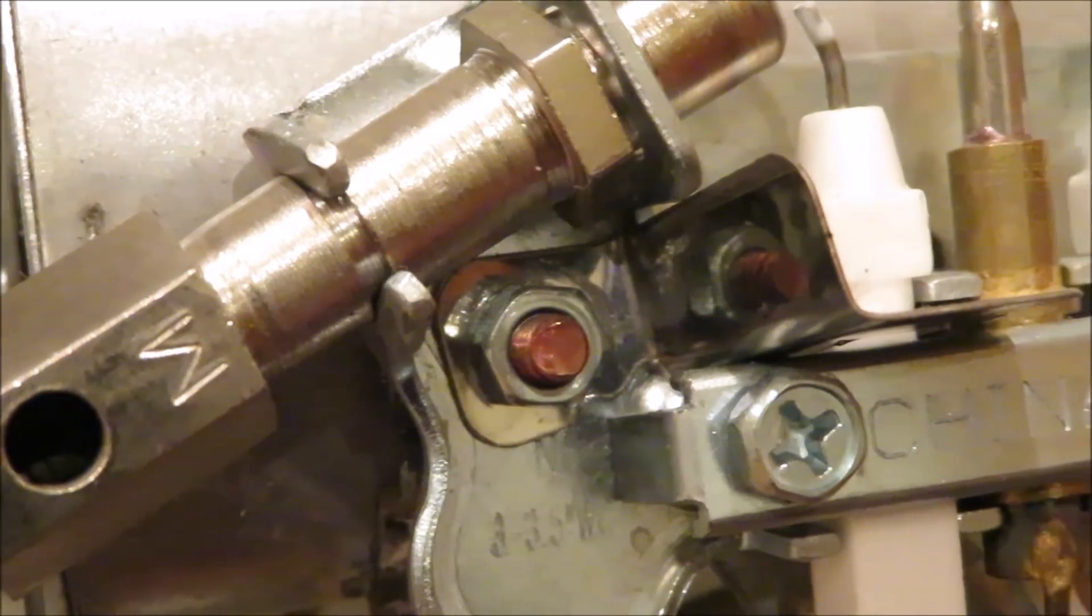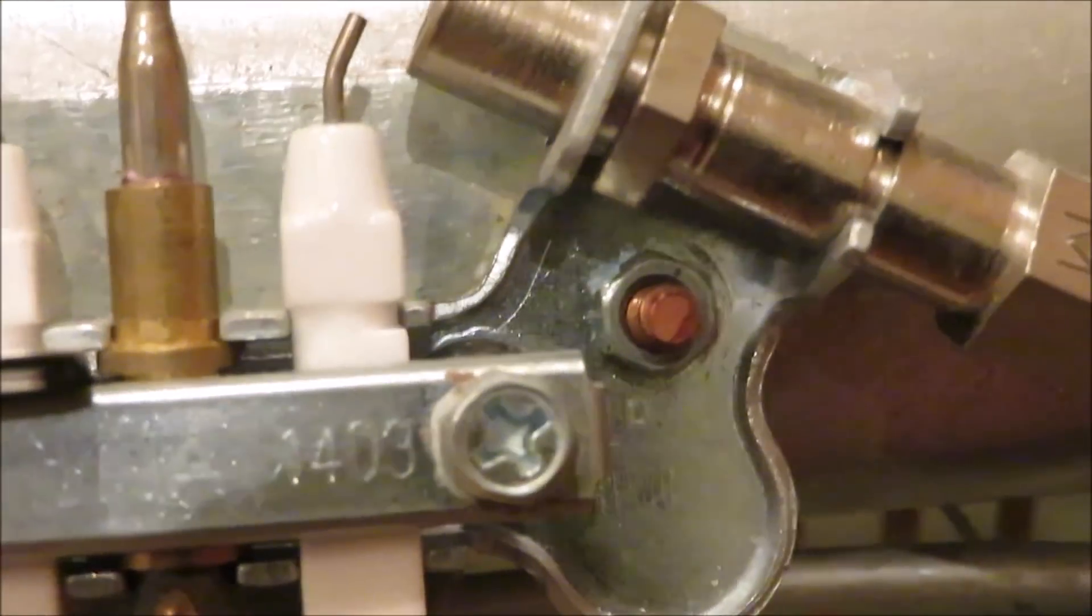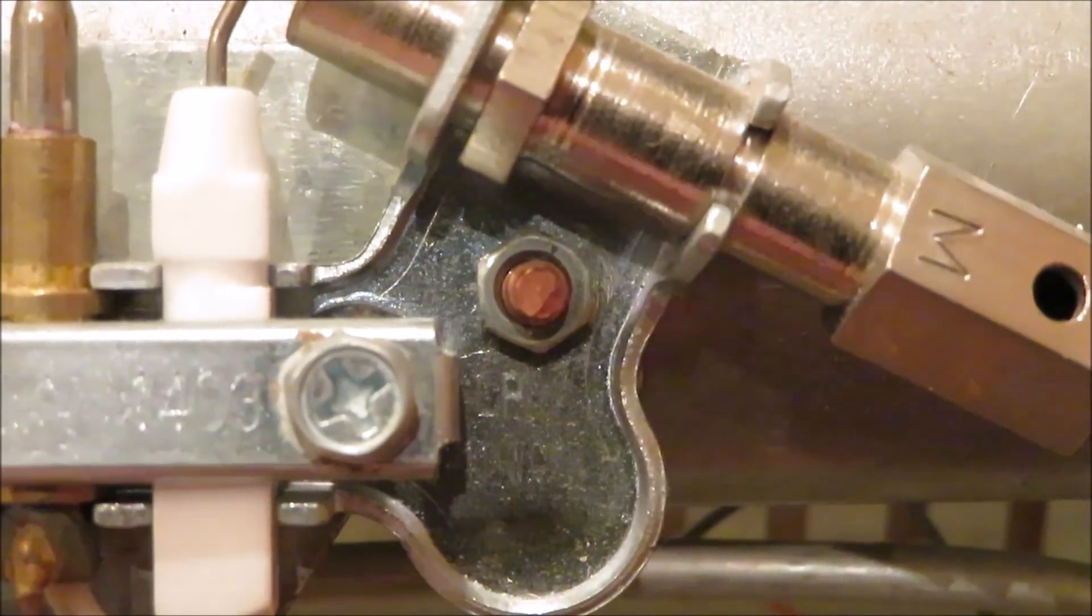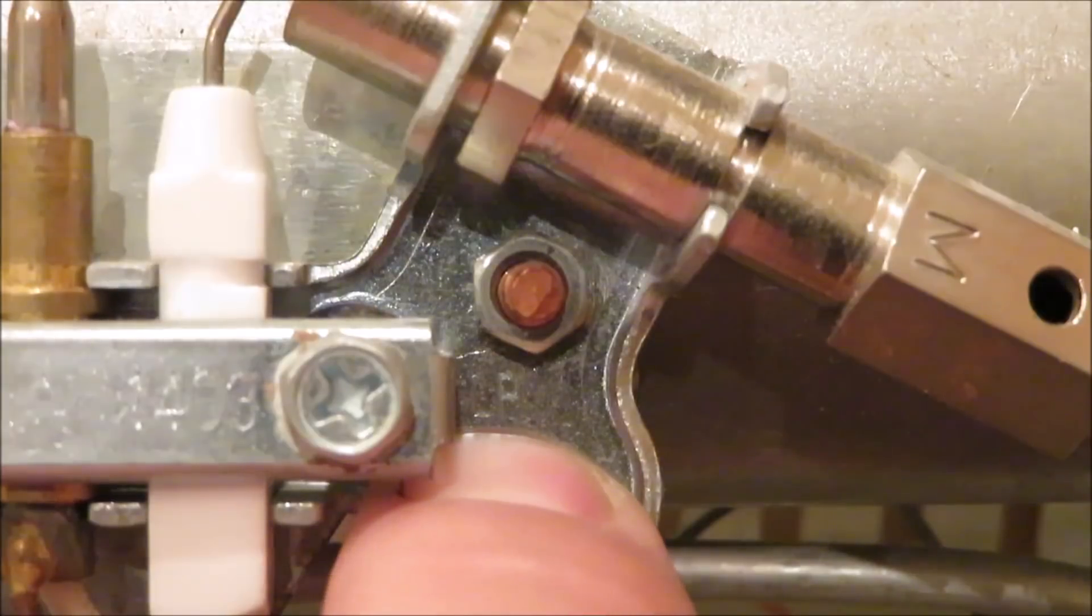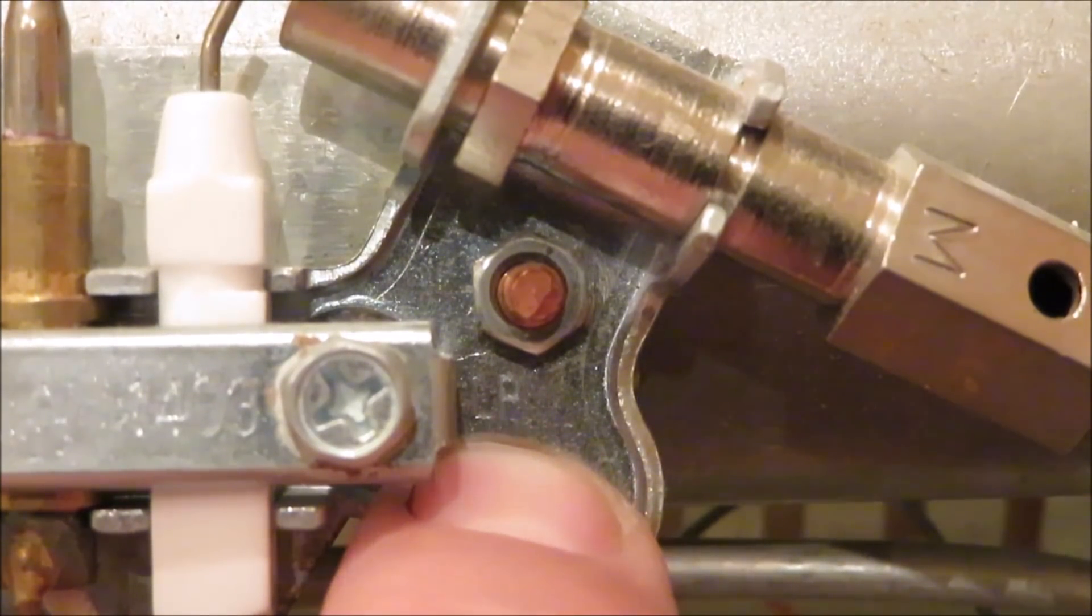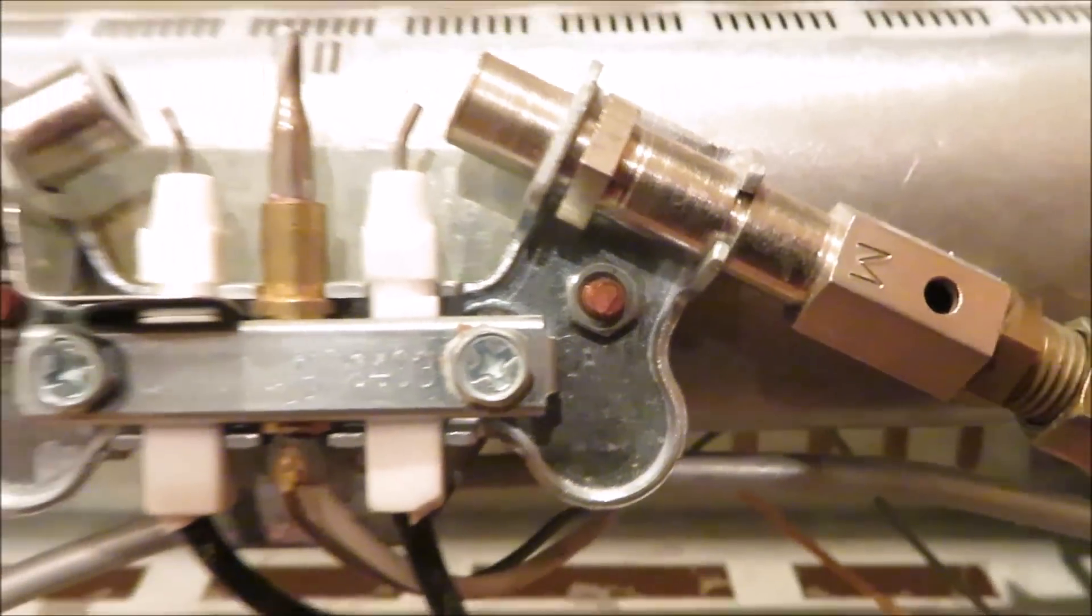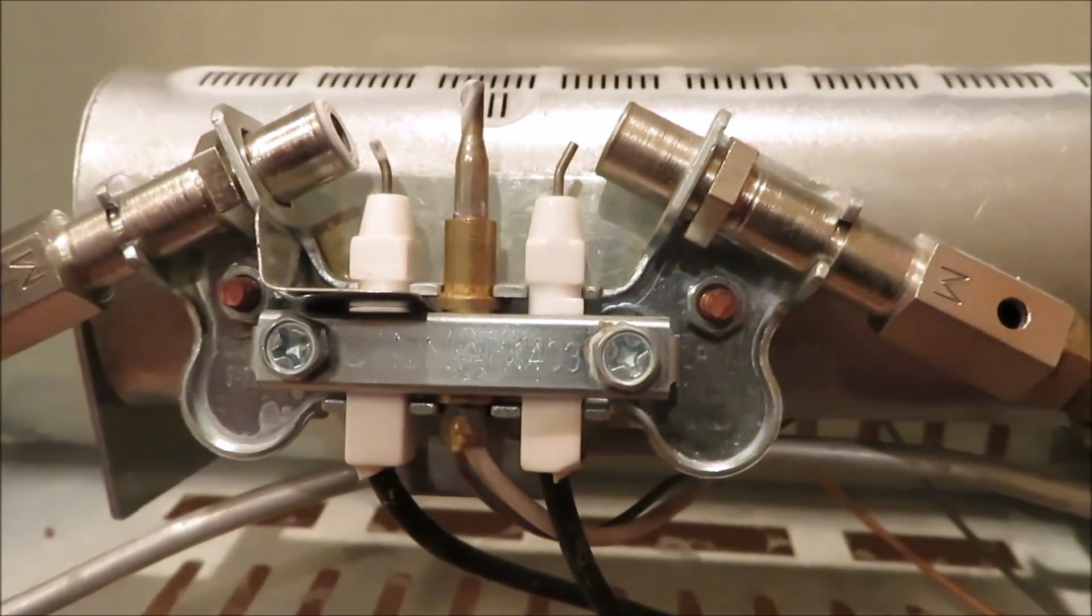Now the other one is on the right hand side. Let me move you over here. And you can see this one a lot clearer. It says LP. So that would be your liquid propane. So this one would be your liquid propane and the other one would be your natural gas. So that's what mine looks like inside.